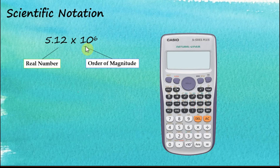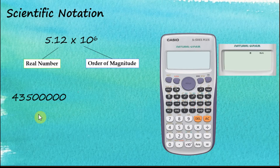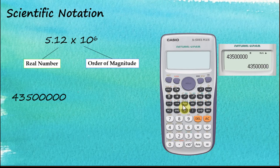Now let's see how to make our calculator display the answer in scientific notation. Let's say we would like to display this answer in scientific notation. Let's switch on the calculator and key in the number 43,500,000, then press equal. We can see that the answer is displayed in normal numbers, not scientific notation.